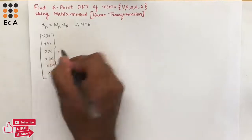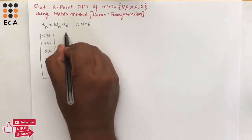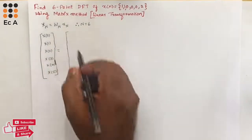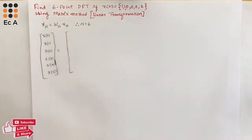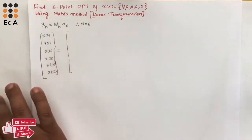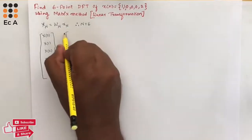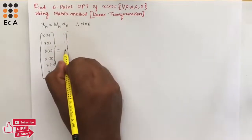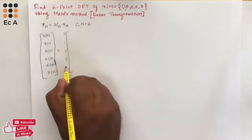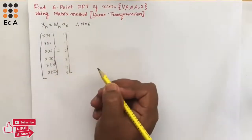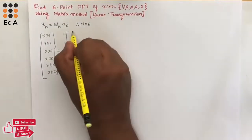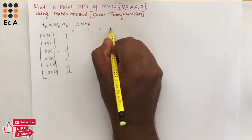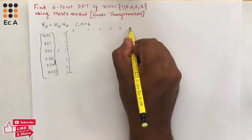This will be equal to the matrix for the twiddle factor WN, which will be a 6×6 matrix. To write that matrix, you write across the top: 0, 1, 2, 3, 4 and 5, and down the side: 0, 1, 2, 3, 4 and 5.